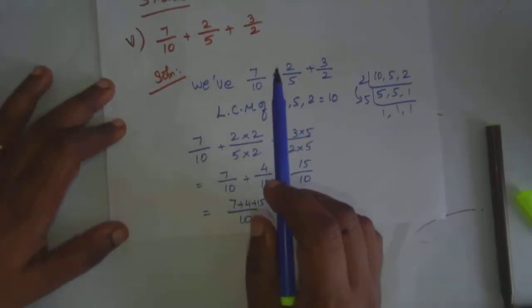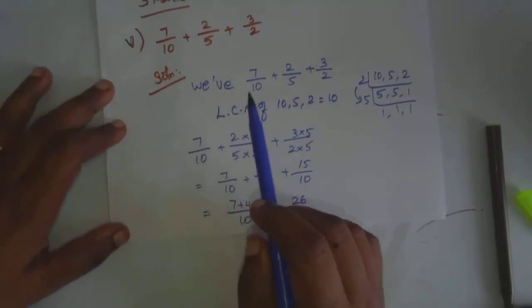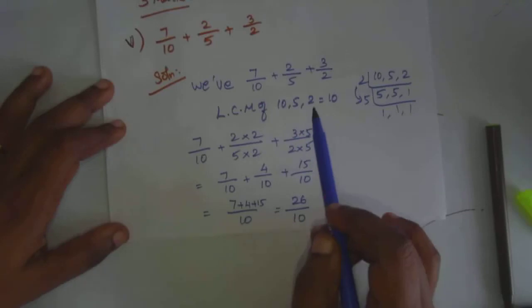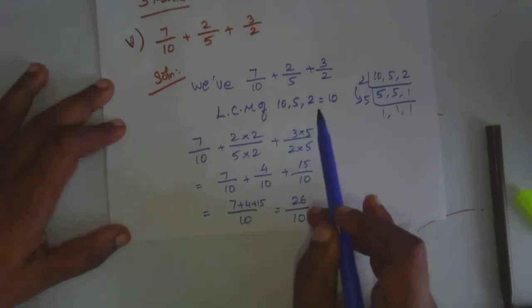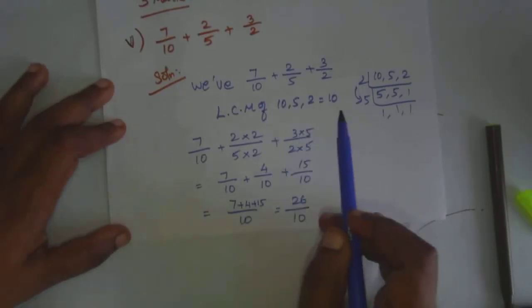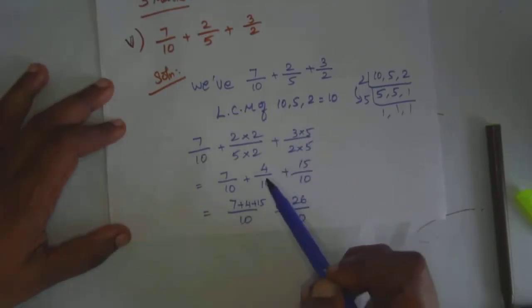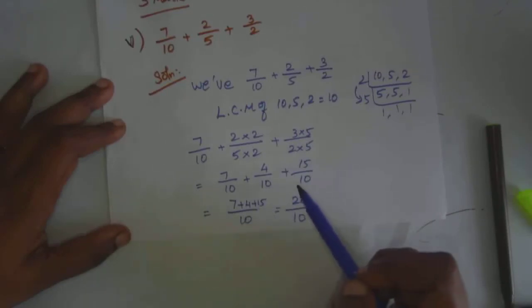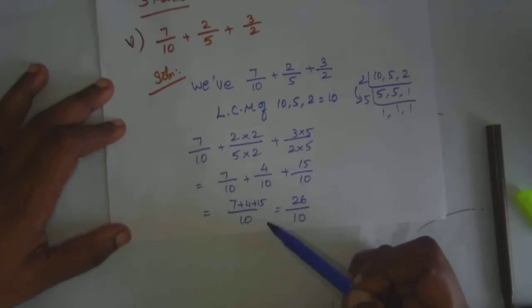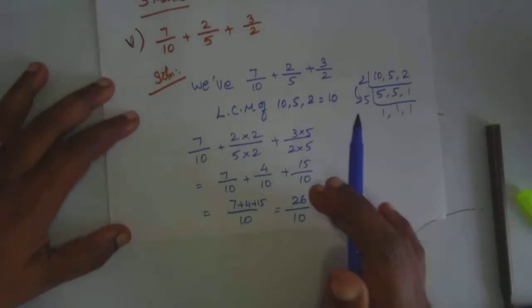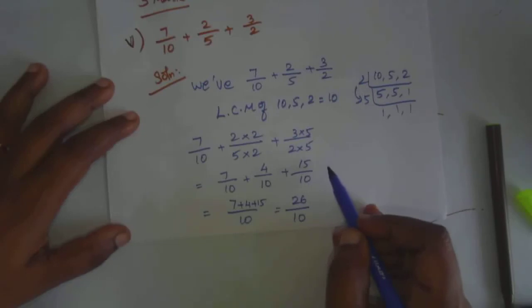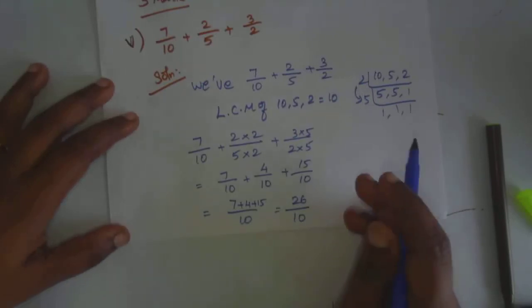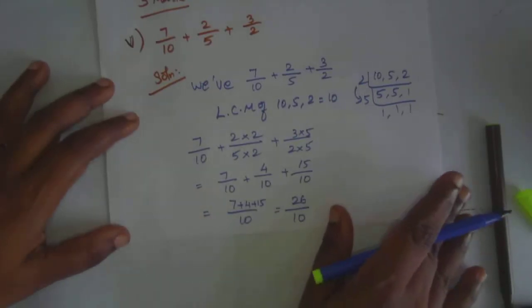In the question the denominators were different, but we converted them to the same value. First we make the denominators the same, then compute. Next question number 7.